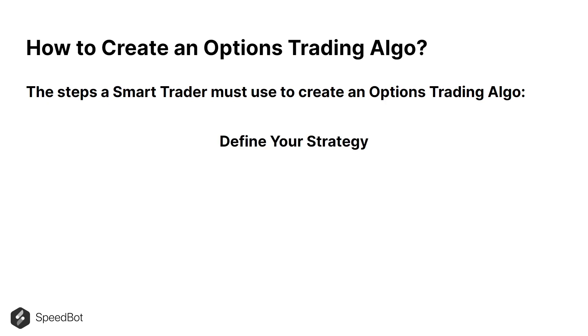The first step is the trader must have a trading rule. A trading rule could consist of an entry condition, an exit condition, targets, and the stop loss, which can be automated.